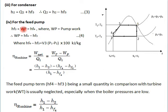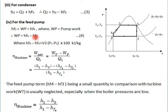For the feed pump: pump work wp is added along with incoming water at enthalpy hf3. The pressurized water exits with enthalpy hf4. Applying SFEE: hf3 + wp = hf4, so wp = hf4 − hf3.